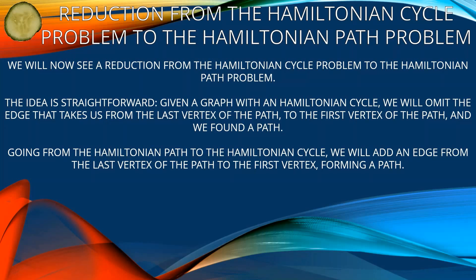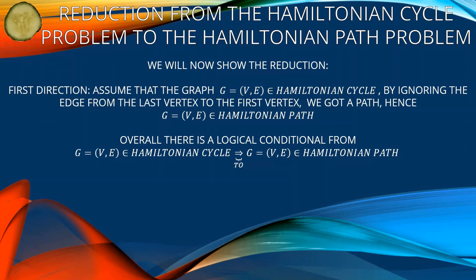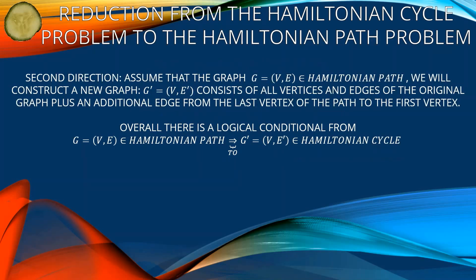However, we will add an edge from the last vertex of the path to the first vertex, forming a cycle. First direction: assume that graph G = (V, E) is in Hamiltonian cycle. By ignoring the edge from the last vertex to the first vertex, we get a path — hence G = (V, E) is in Hamiltonian path as well. Overall there is a logical conditional from G = (V, E) in Hamiltonian cycle to G = (V, E) in Hamiltonian path.